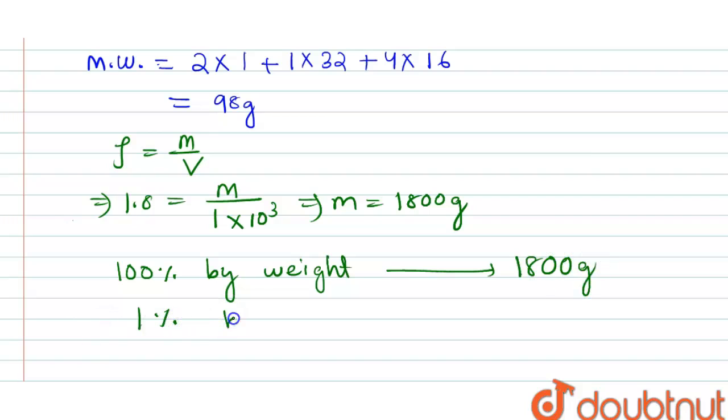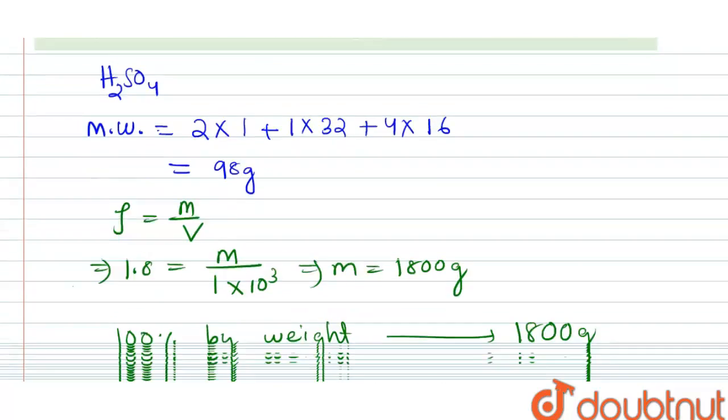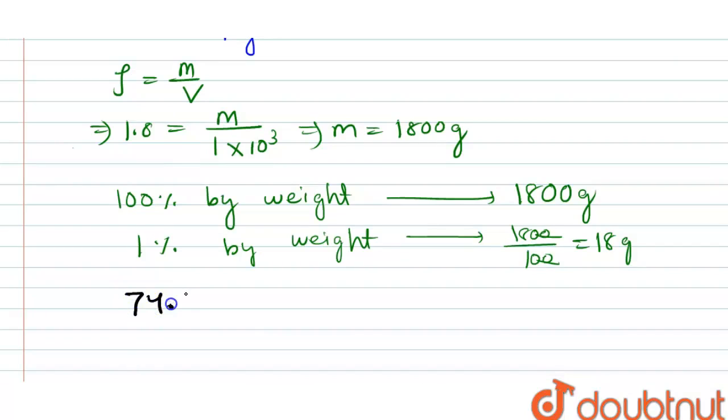So 1% by weight will be 1800 divided by 100, that is 18 gram. We have to calculate 74.66% by weight. So 74.66% by weight is equal to 18 into 74.66 gram.